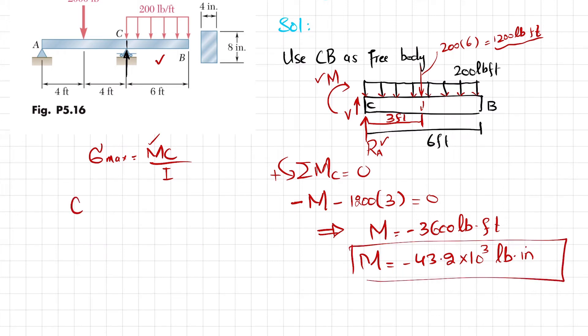Now you know that C is the distance from the centroidal or neutral axis, so C equals 8 divided by 2, which equals 4 inches. And I equals BH cubed over 12. B is 4 inches and height is 8, so 8 cubed divided by 12, and I comes out to be 170.667 cubic inches.